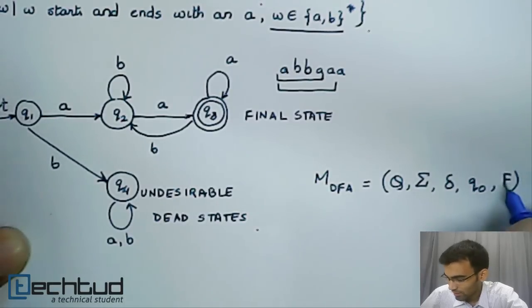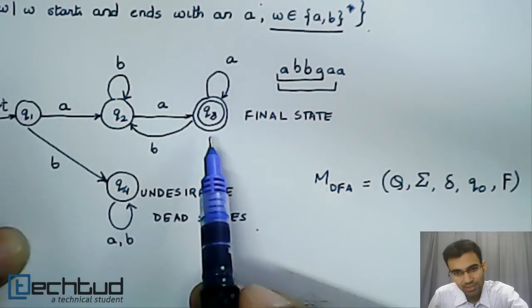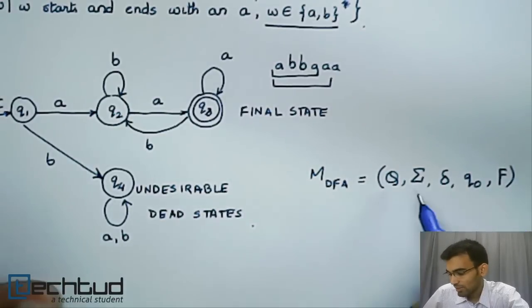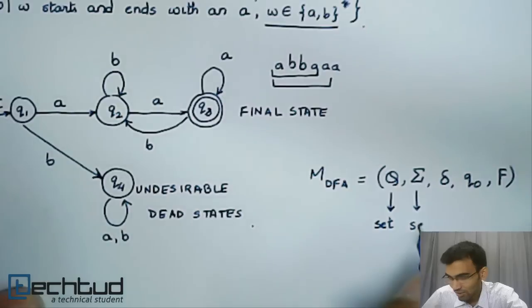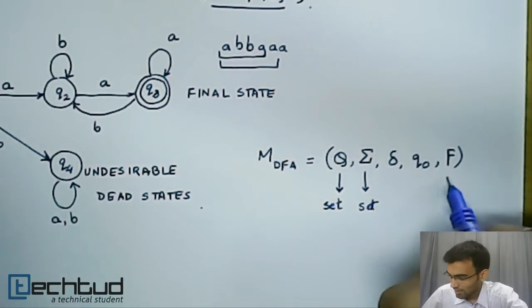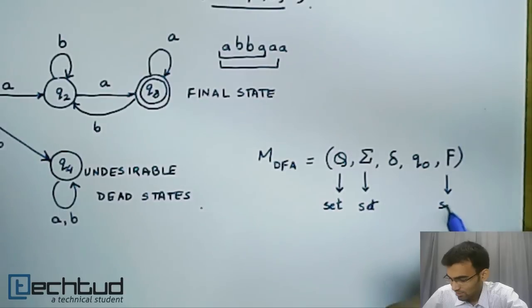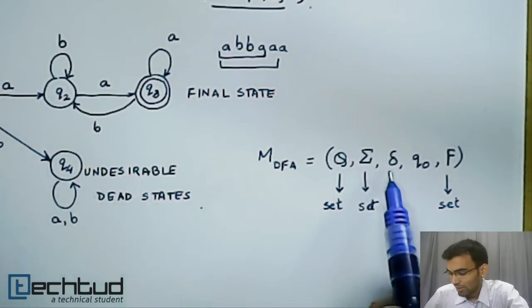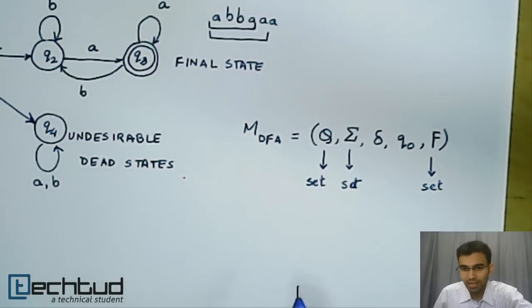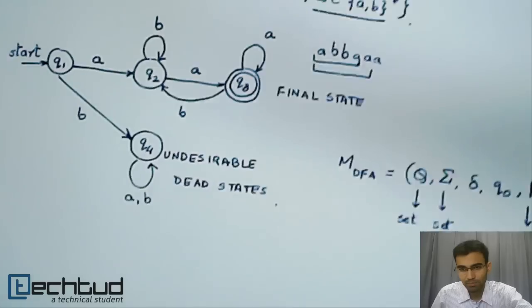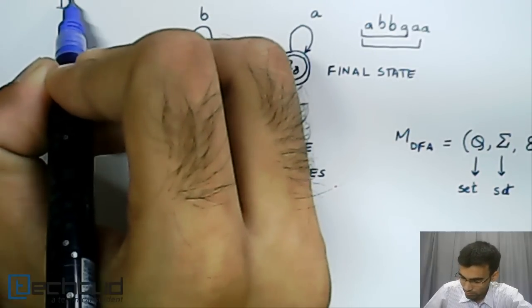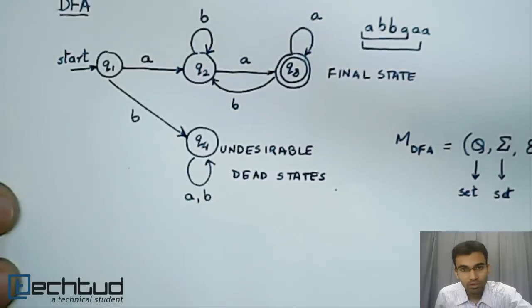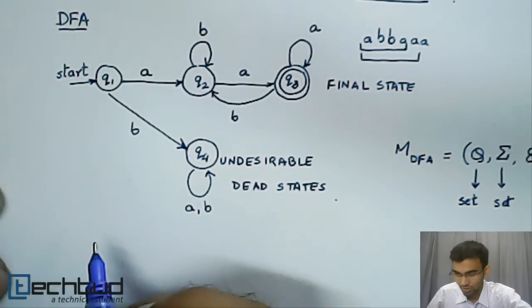F is the set of final states. In this case, the single state Q3. Please remember that Q is a set of states, Sigma is an alphabet which is a set of letters, and F is a set of final states. Delta is a transition function which we typically write in the form of a table.